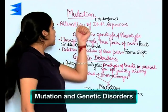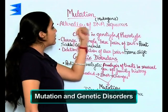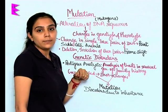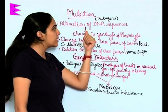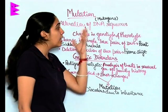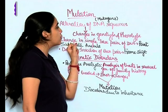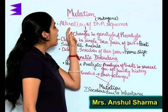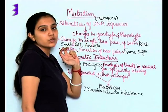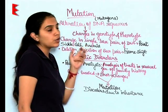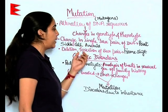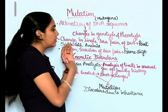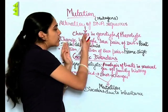Mutation is nothing but alteration of DNA sequences. Mutations are caused by mutagens, which are chemical or physical agents that lead to alteration of DNA sequences. The alteration of DNA sequence could be addition or deletion of any base pair, or any changes in the coiling or the strands of the DNA.